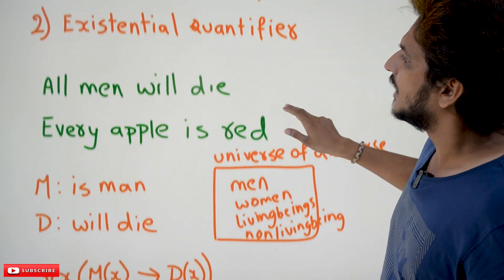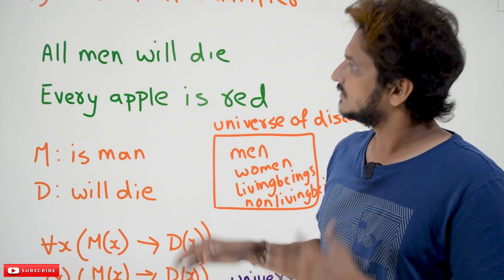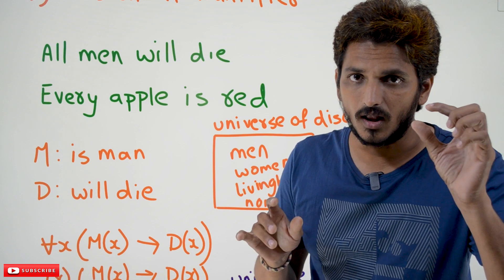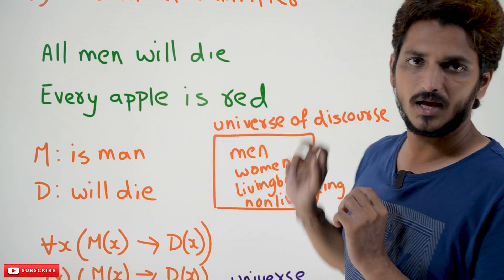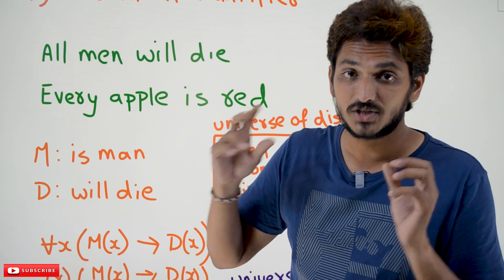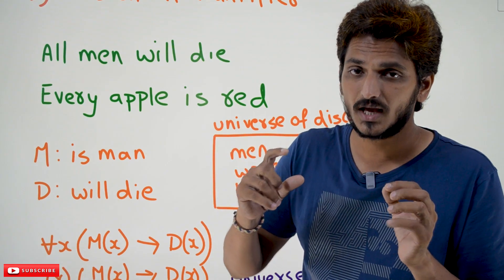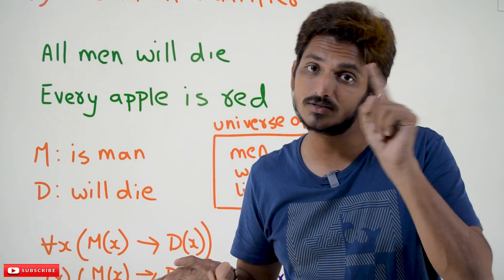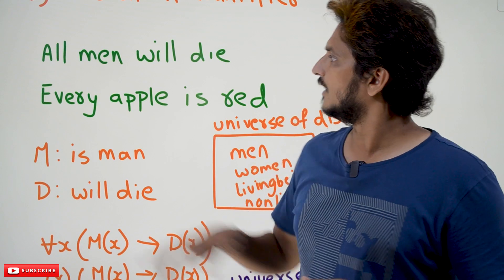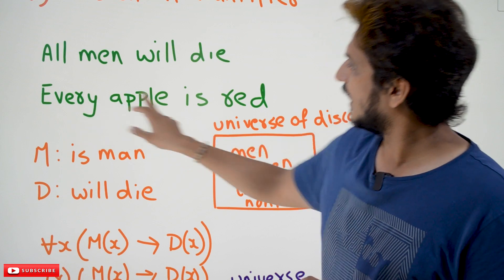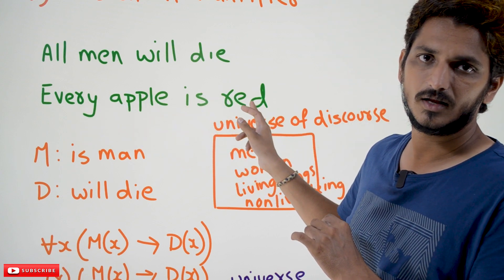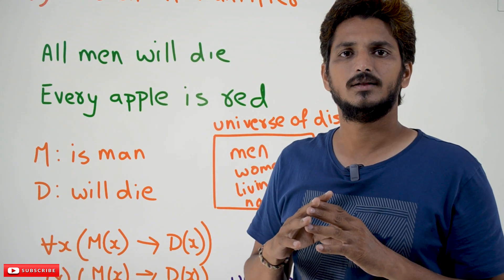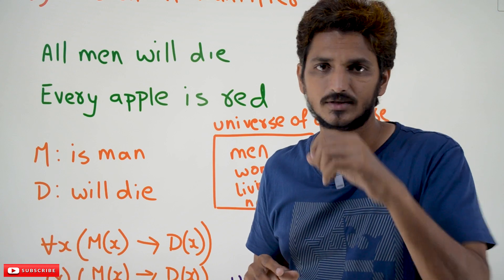Coming to the first one — universal quantifier. Take an example and understand: 'All men will die', 'every apple is red.' Universal quantifier means it is applicable for all. Then we say it as universal quantifier. It is applicable to all apples, it is applicable to all men. This type of quantifier we call it as universal quantifier.